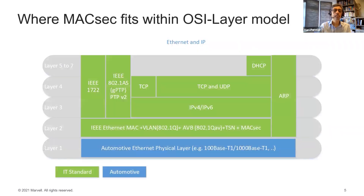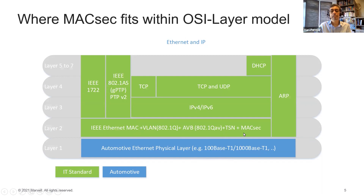So where does MacSec fit into the OSI layer model? At the bottom we see the Automotive Ethernet physical layer, for example 100Base-T1X, 100Base-T1, and 1000Base-T1. At layer 2 we see VLAN, AVB, and TSN — and this is where MacSec fits in, at layer 2.